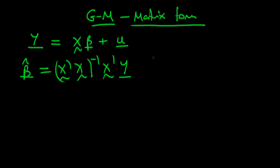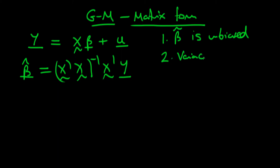The idea with the Gauss-Markov theorem proof is that the first stage is we form some other estimator, beta tilde, and we have to prove that beta tilde is unbiased under certain conditions. The Gauss-Markov theorem is about the conditions under which least squares estimators are BLUE, and one component of being BLUE is that it has to be unbiased. We then find the variance for beta tilde and prove that the variance of beta tilde is greater than or equal to the variance of the least squares estimator.